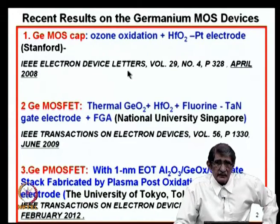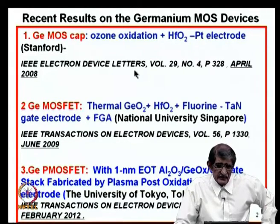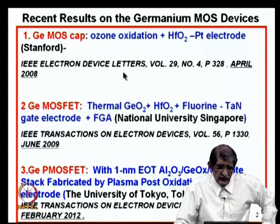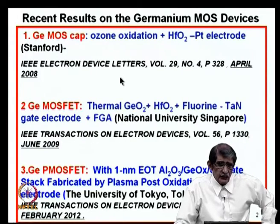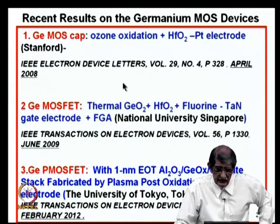Originally, it was believed that germanium oxide should be completely removed from the surface, followed by passivation techniques like ammonia passivation and deposition of high-k dielectric. But later it became clear that it was not the germanium oxide causing the problem. Germanium oxide would actually help if you do proper stoichiometric oxide growth — good quality germanium oxide, then passivation and high-k dielectric deposition to make MOSFET devices.